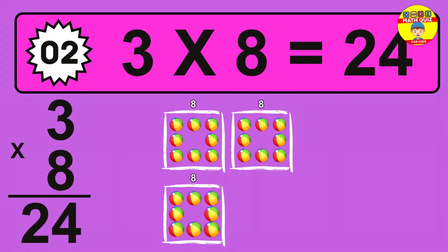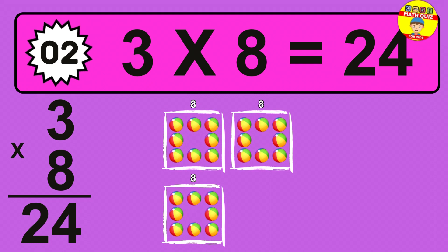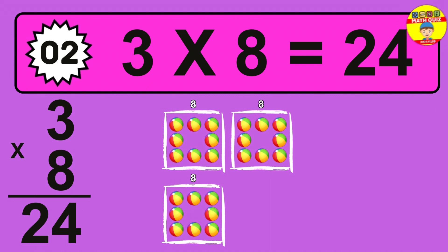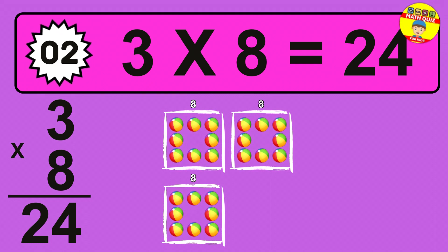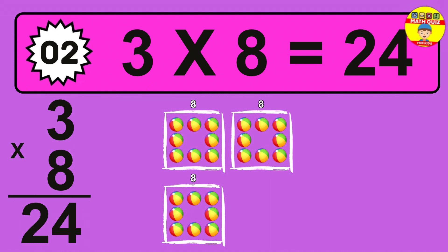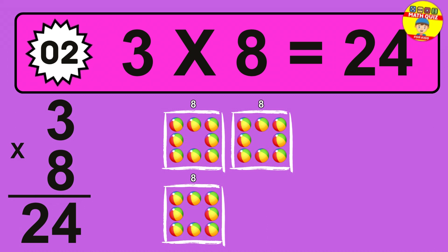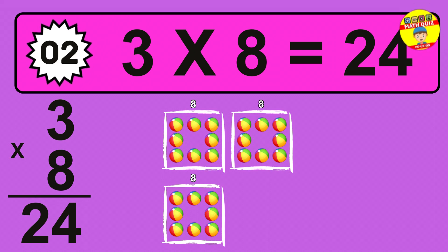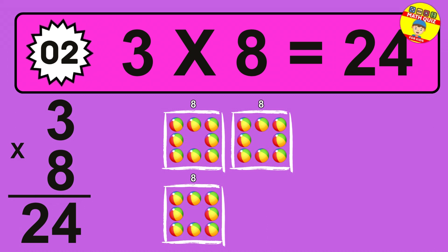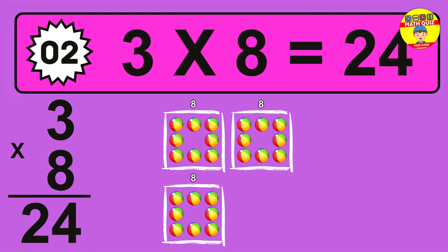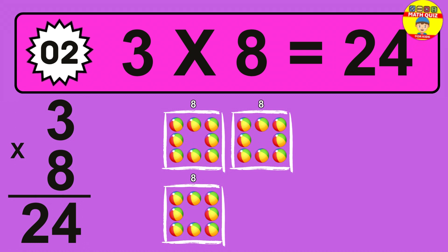The answer is 3 times 8 is 24. To calculate, we have 3 groups with 8 balls each one. So, how many balls do we have? 24 balls.